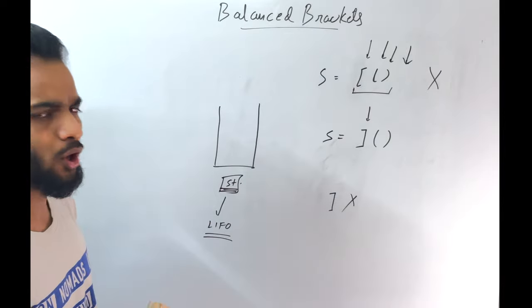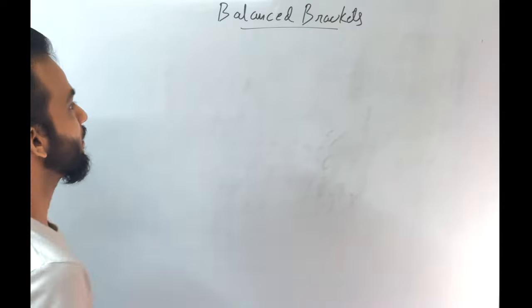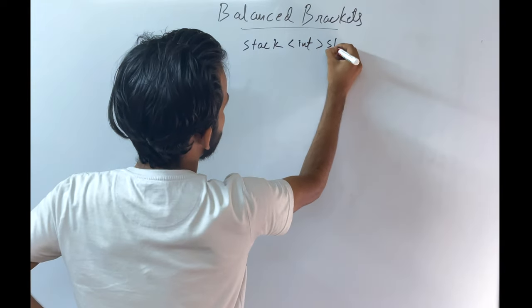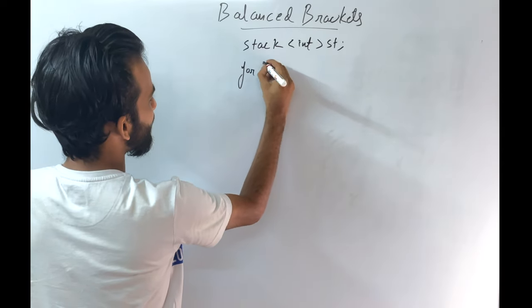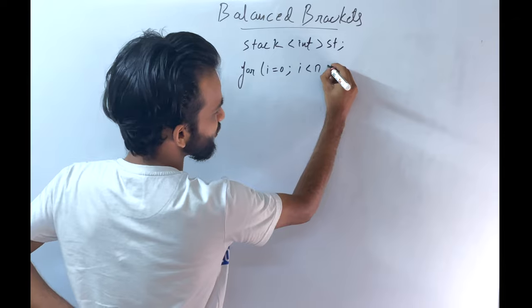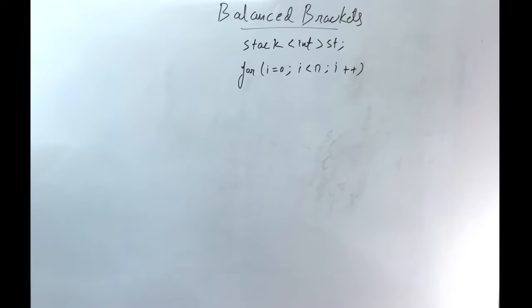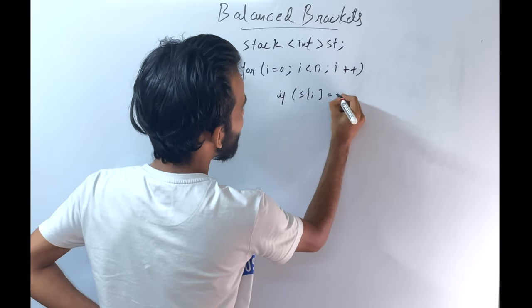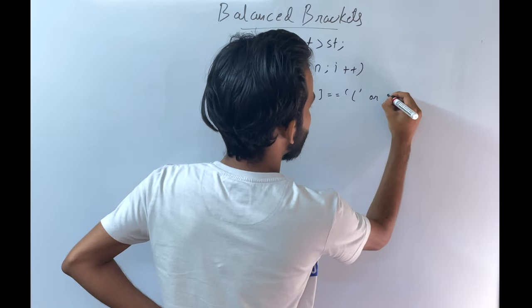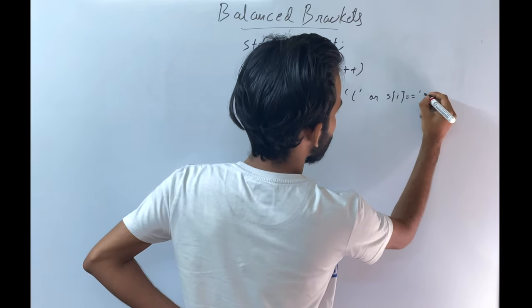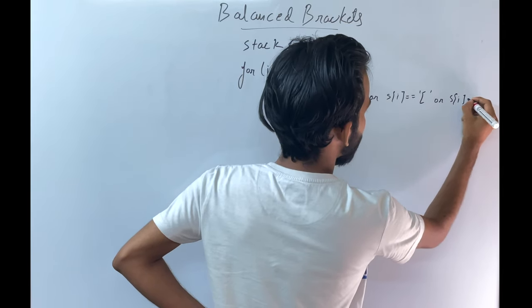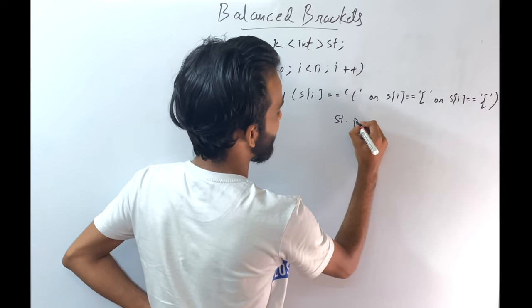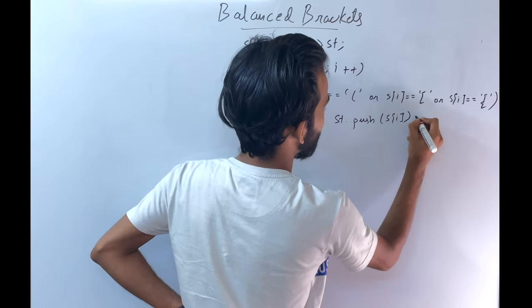Now I'll be moving on to the code. Let's check out the code with all the edge cases covered. I have a string, so first I have to declare a stack. This is how I'll declare a stack. And now, you'll iterate from i equal to 0 to i less than n, which is the string size, and keep on moving. If it's an opening bracket — if it is this bracket, or this bracket, or the other one — I'll take this stack and push in string[i].